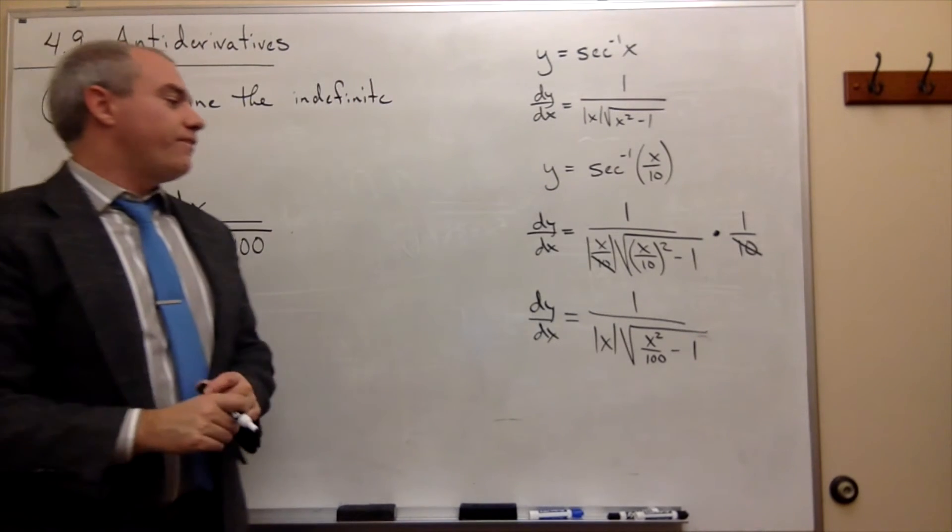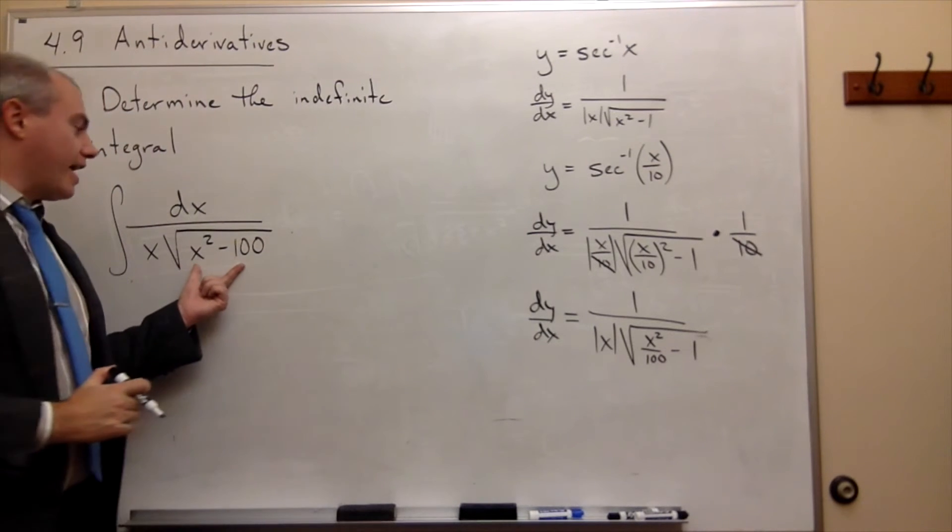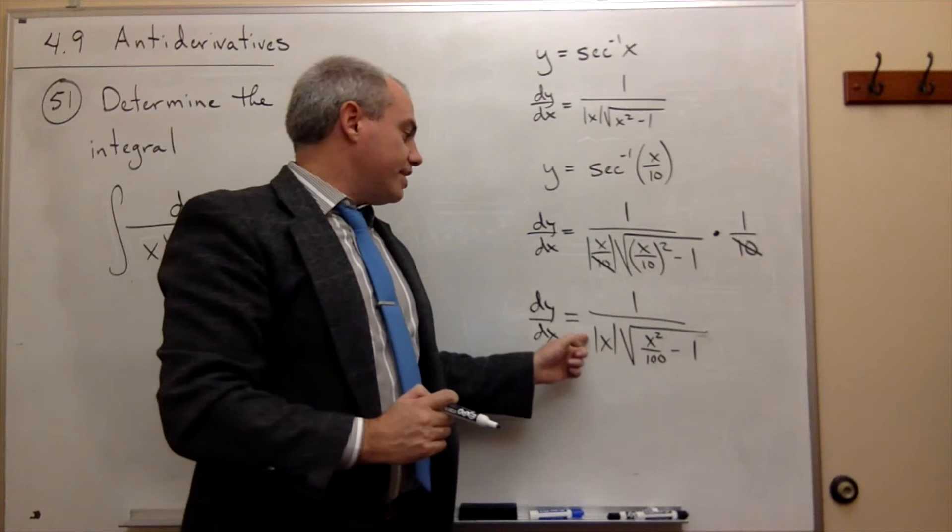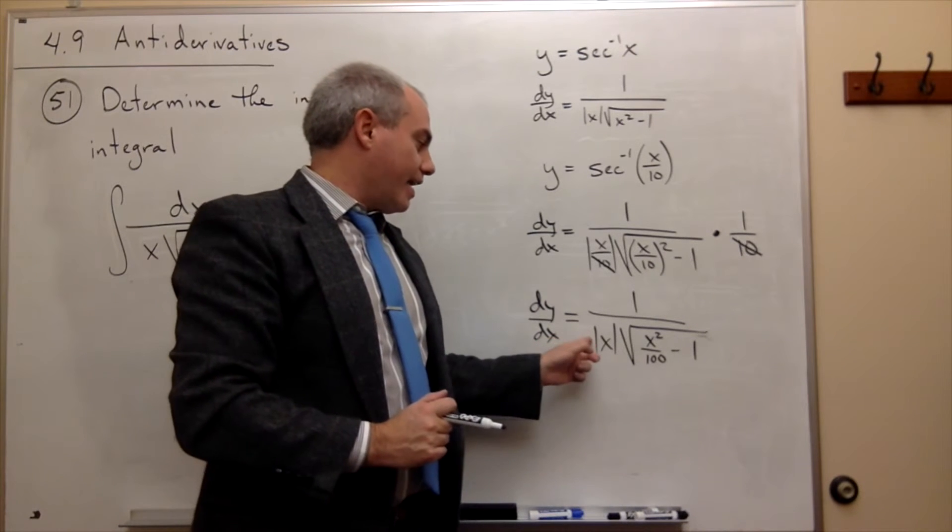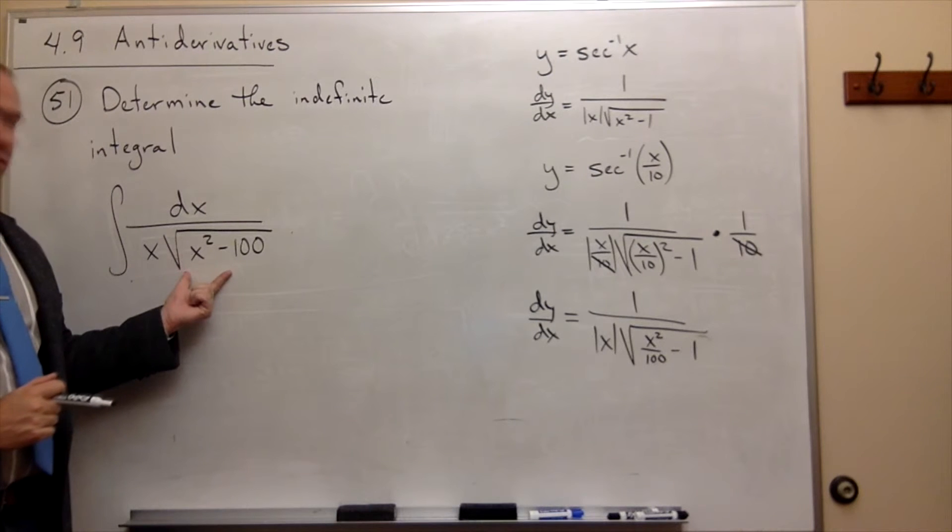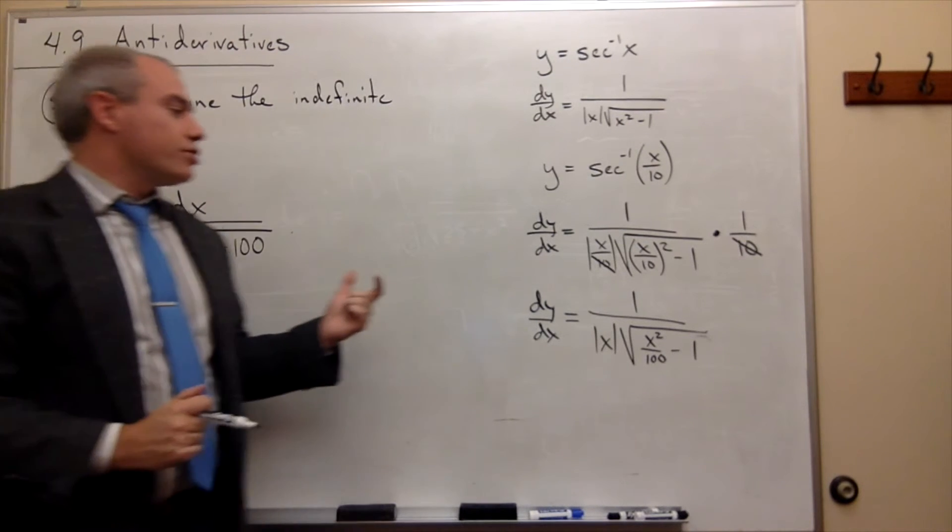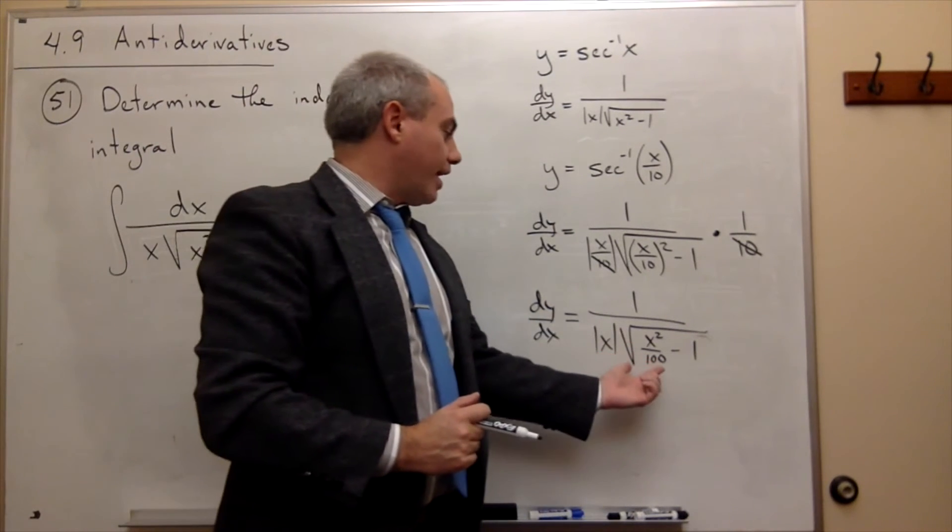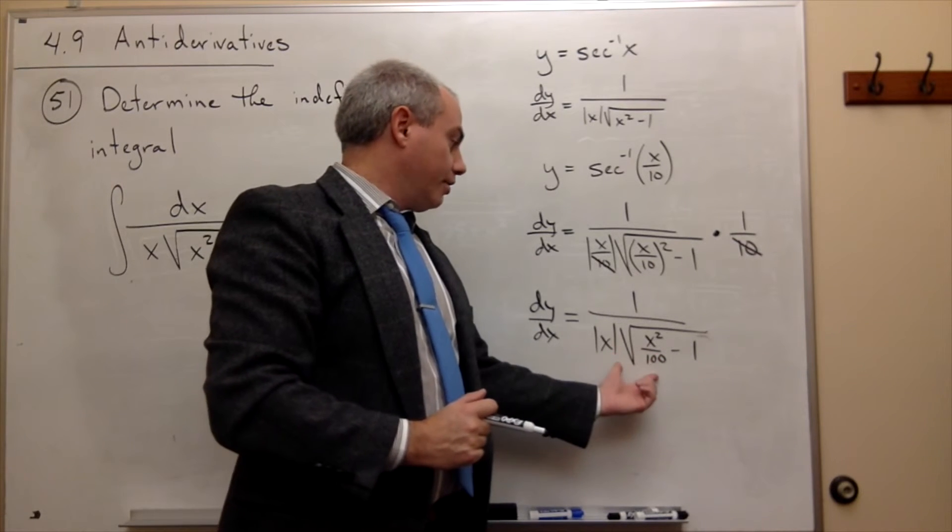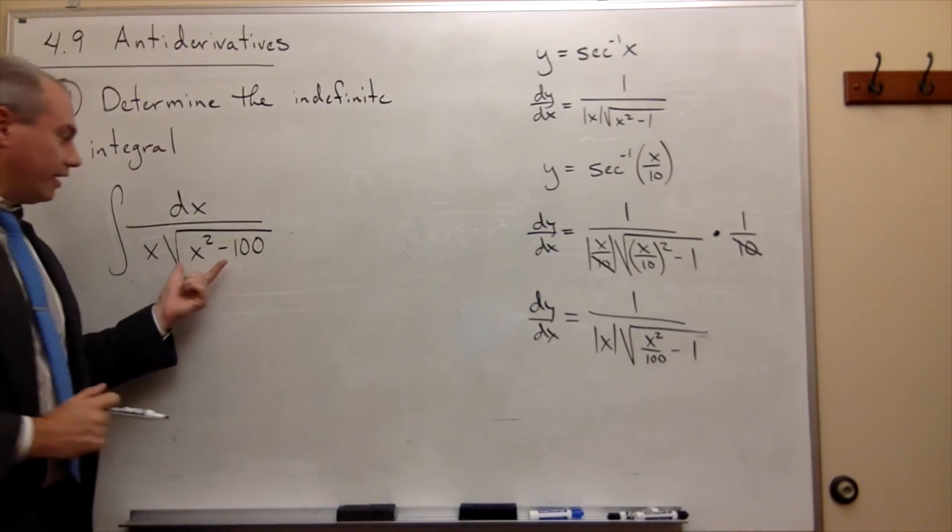This is very close to what we have over here. The only difference is this needs to be multiplied by 10 on the bottom to be this. So if I were to multiply this thing by 1 over 10, then it would be exactly this guy.